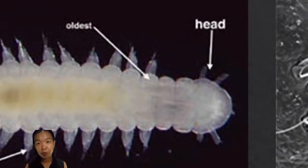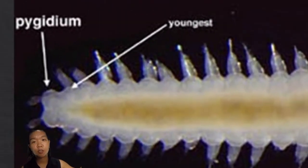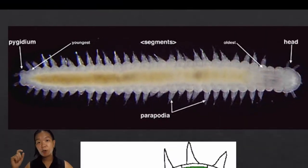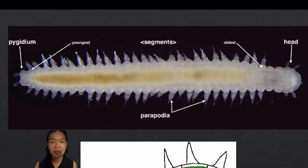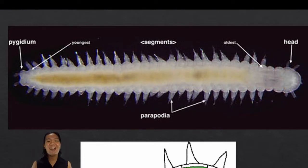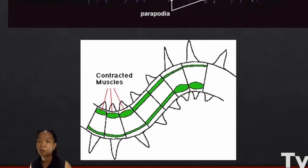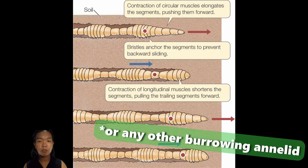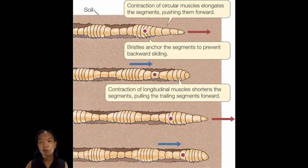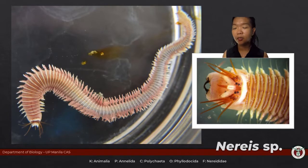For the typical anatomy of an errant polychaete: the head part has the prostomium and peristomium; the trunk has all the repeating segments; and the tail is called the pygidium. The head and pygidium are the two regions that are not segmented. The oldest segments are in the anterior part; the youngest parts are closest to the posterior. Errant polychaetes mostly rely on their parapodia for movement, using them like flippers. Sedentary polychaetes rely on contraction of circular muscles and use setae to anchor — that is peristaltic motion.